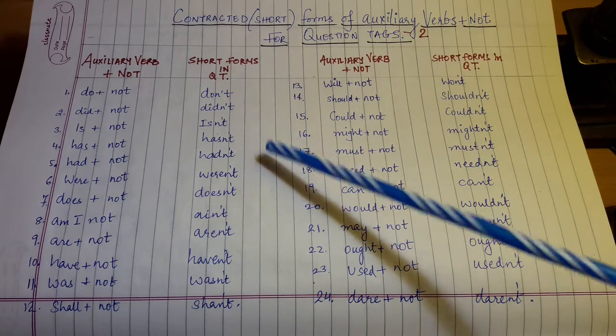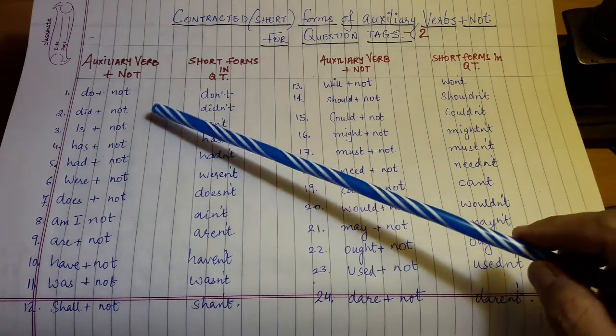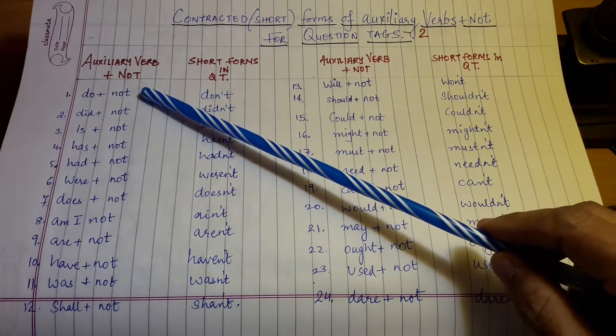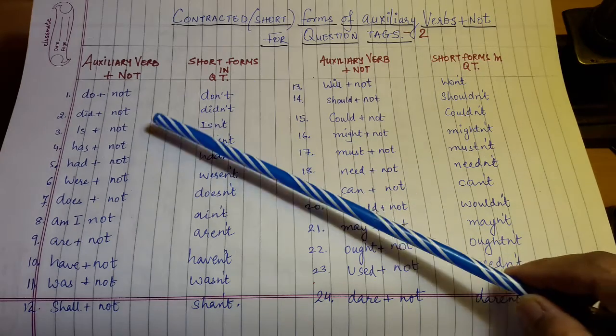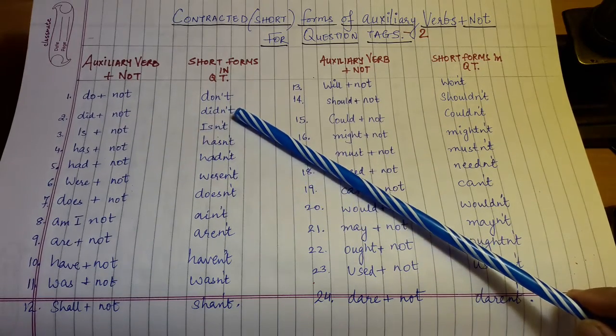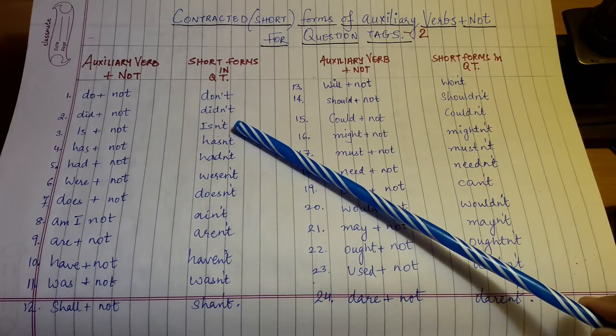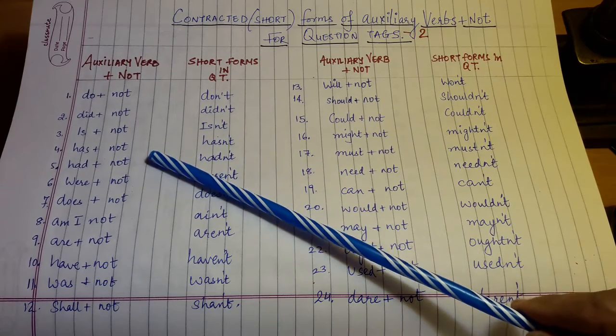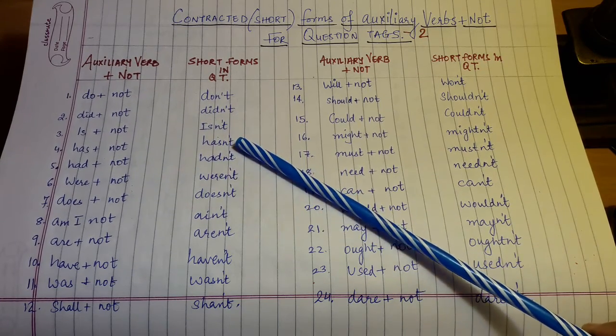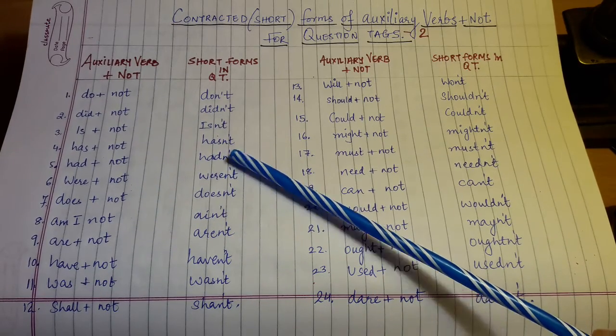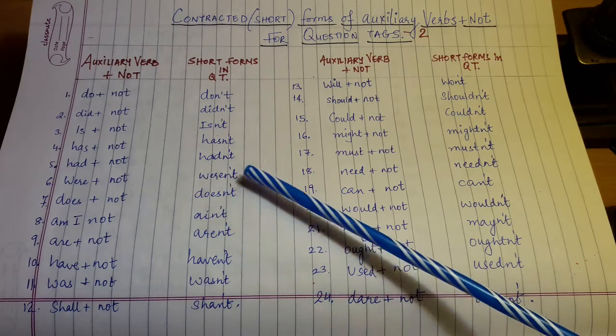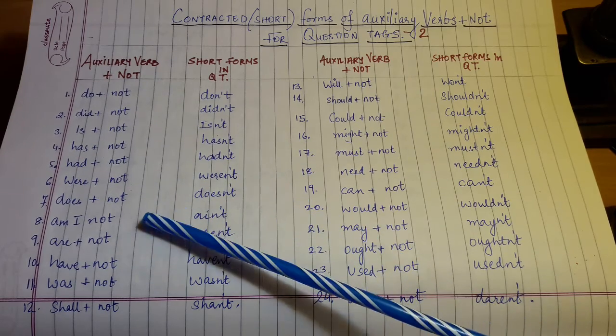Let's start: do not - don't, did not - didn't, is not - isn't, has not - hasn't, had not - hadn't, were not - weren't, does not - doesn't.